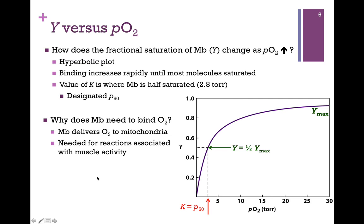And so now, how does that relate to its role within the cell? Well, myoglobin's job is to pick up oxygen in the tissues and deliver it to the mitochondria. It's needed for reactions associated with muscle activity, specifically aerobic respiration. So you can see, it is well suited to its function.